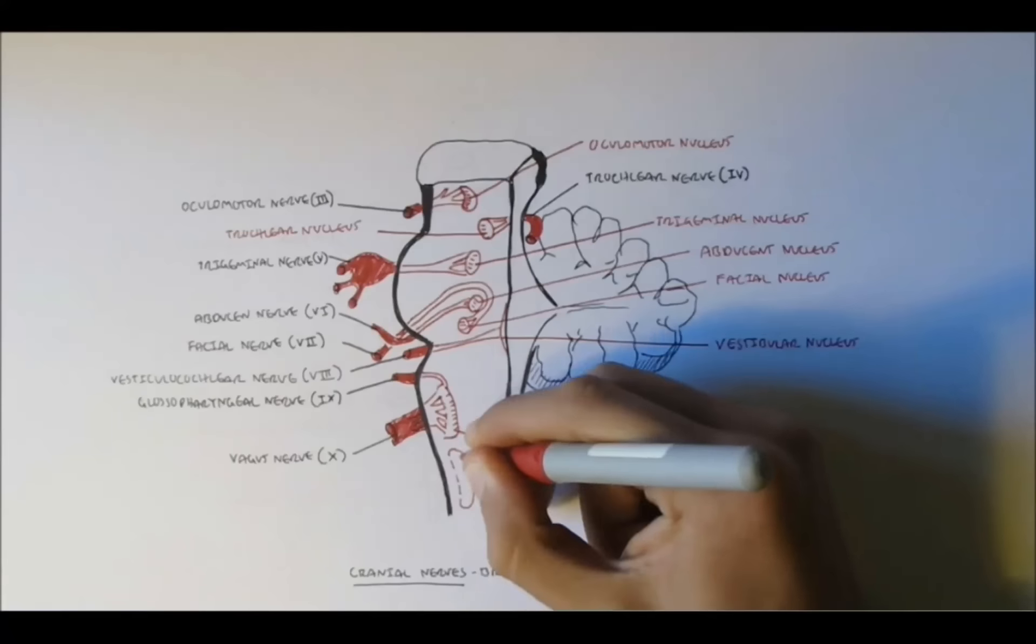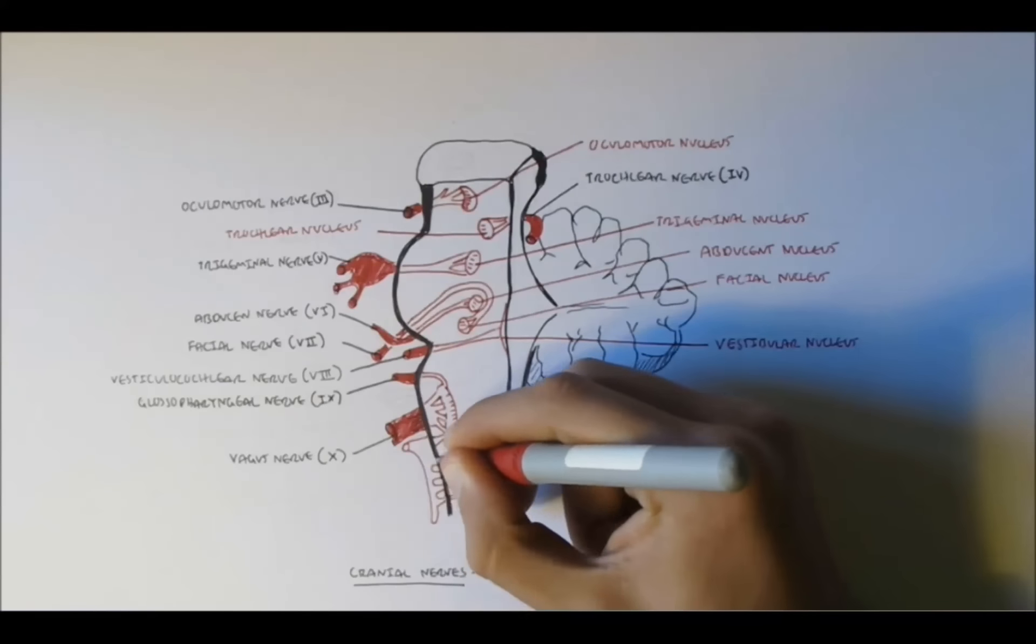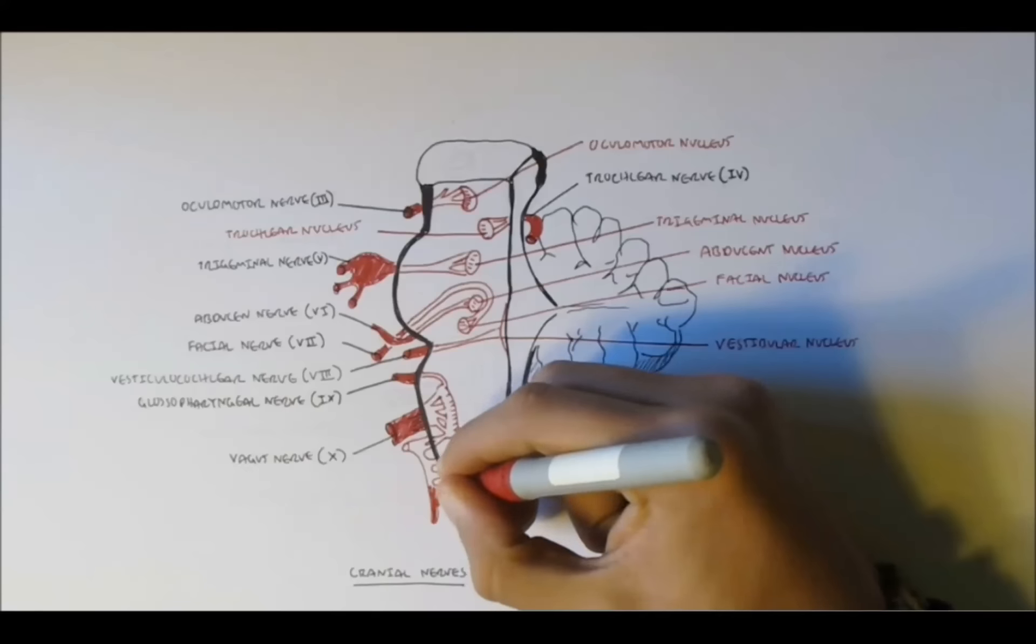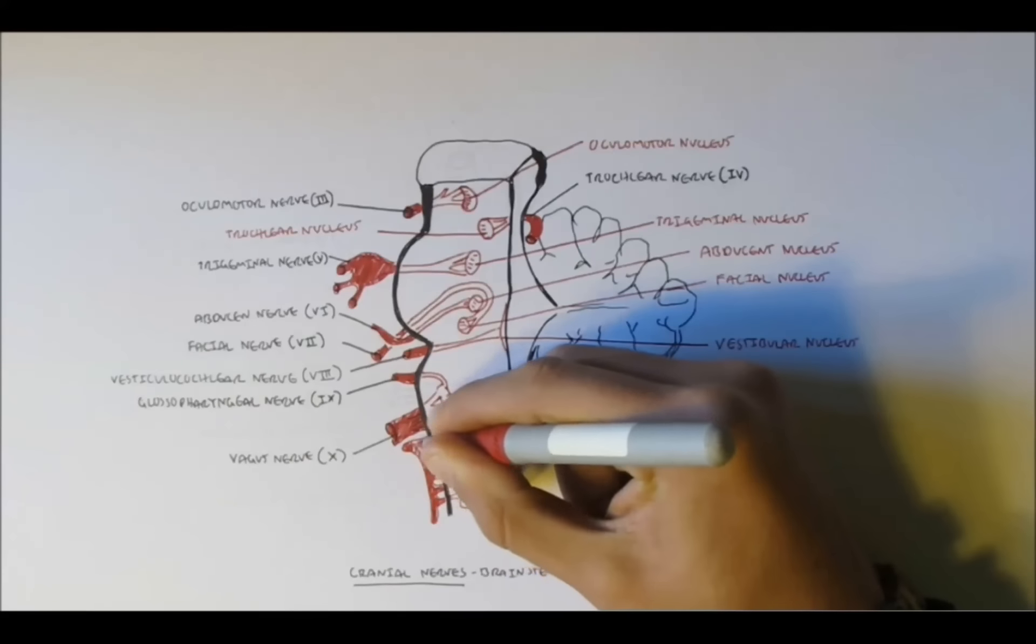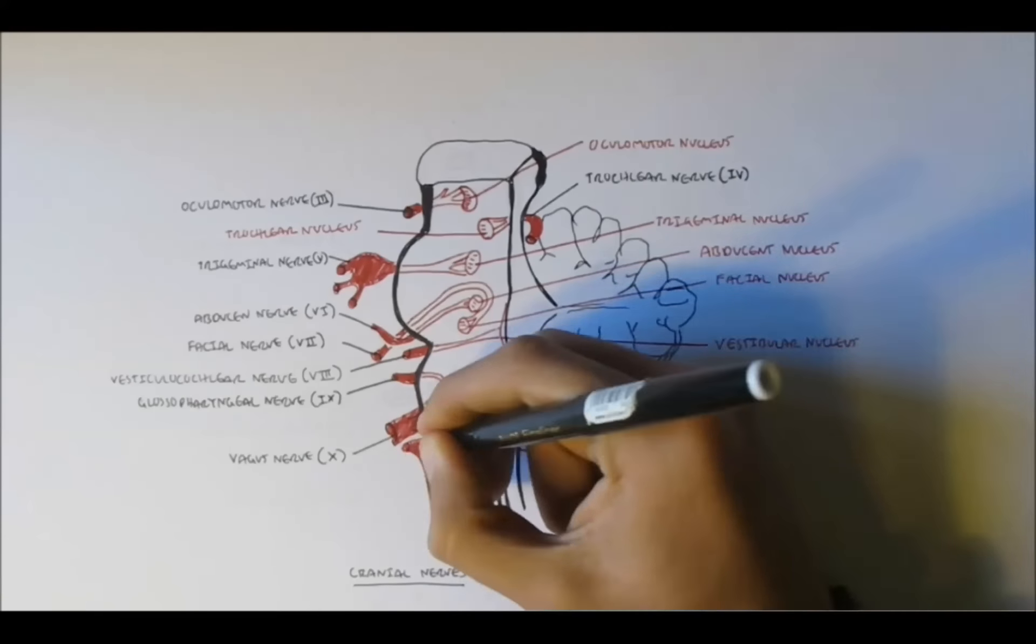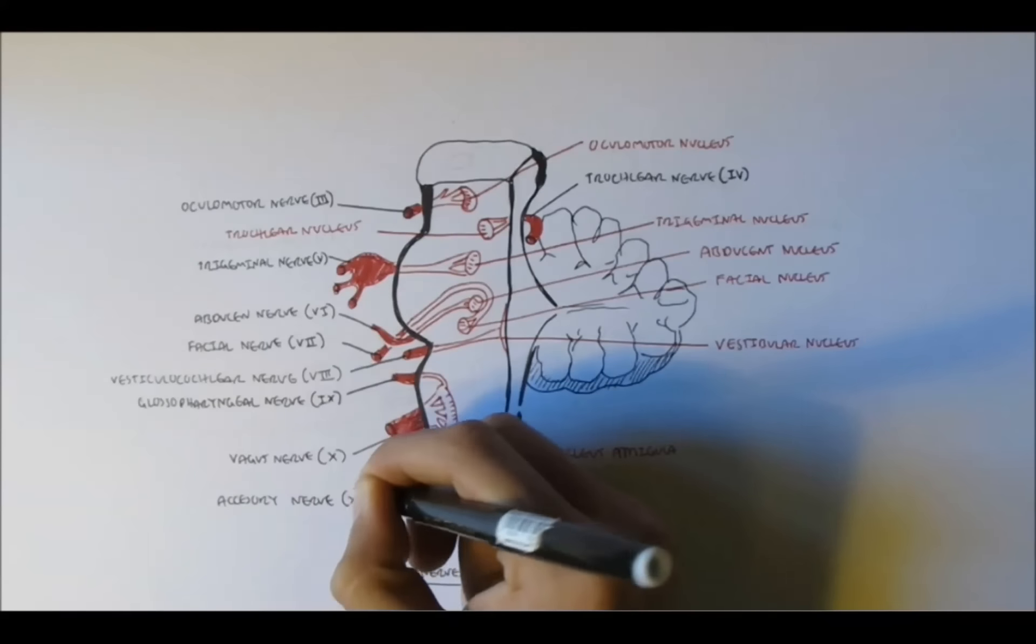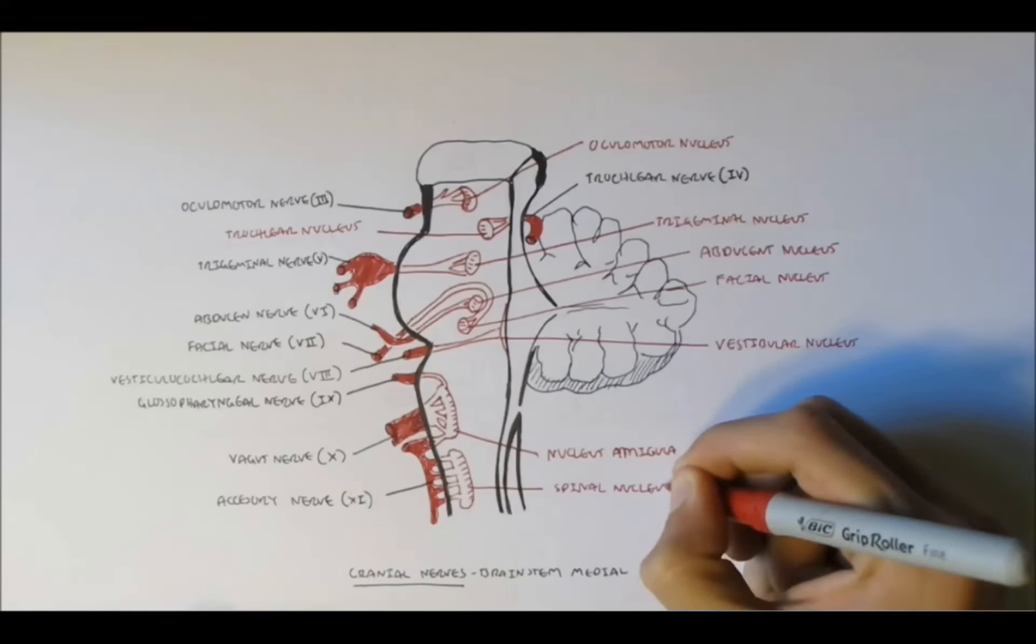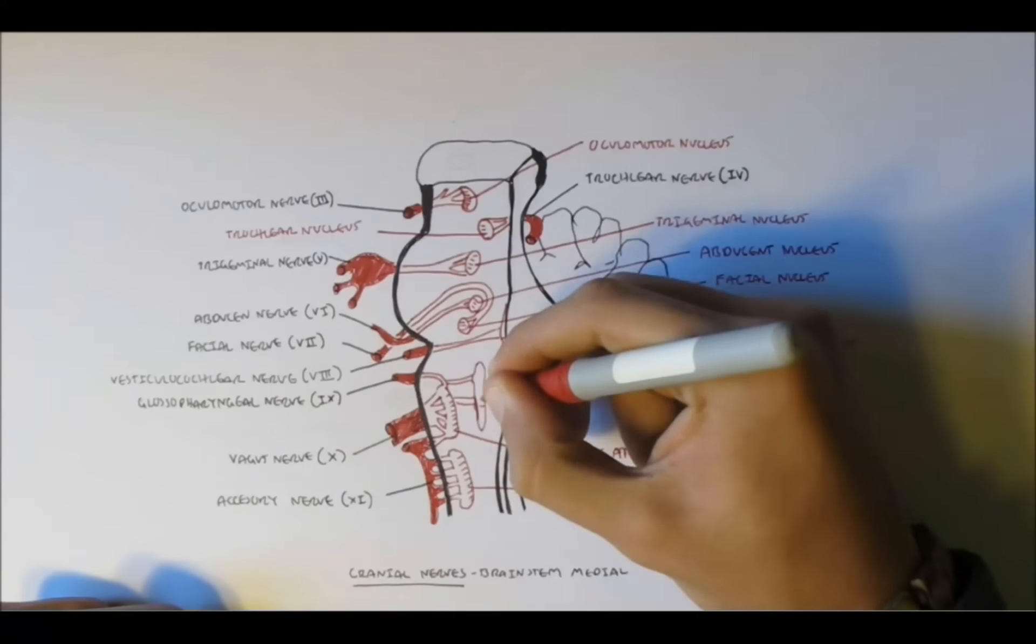Nerve 11, the accessory nerve, comes just above where the spinal cord is beginning. The accessory nerve, nerve 11, connects to the nucleus called the spinal nucleus.